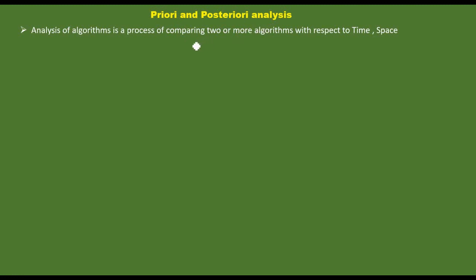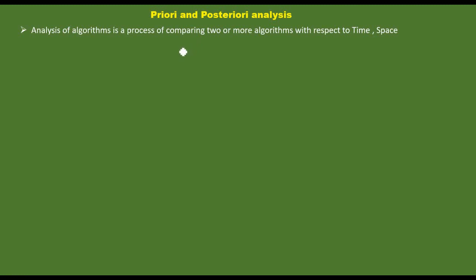We are going to design a problem, solve an algorithm, and select the best algorithm. We will use two criteria for analysis: time and space. We will discuss the process of comparing two or more algorithms with respect to time and space.